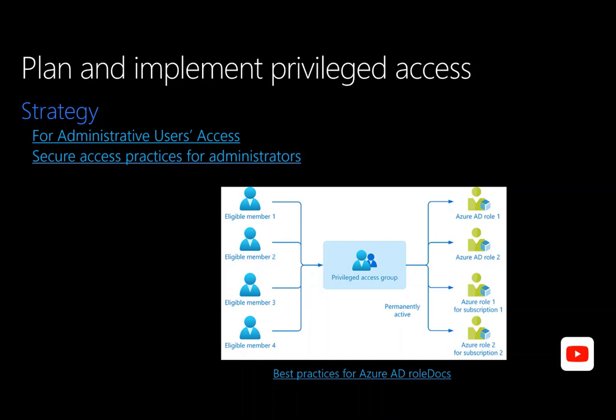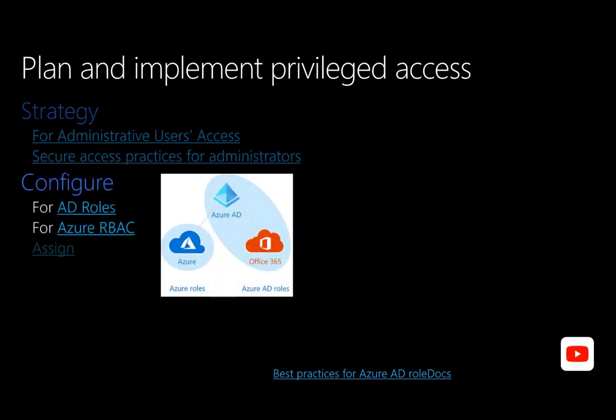Once you've decided the list of roles to be managed by PIM, you must decide which users should get the eligible role versus the permanently active role. Permanently active roles are the normal roles assigned through Azure AD and Azure resources, while eligible roles can only be assigned in PIM. There are four possible states for an assignment: eligible permanently, active permanently, eligible with specified start and end dates, and active with specified start and end dates. You can also protect your Azure AD organization by setting an expiration time for assignments.